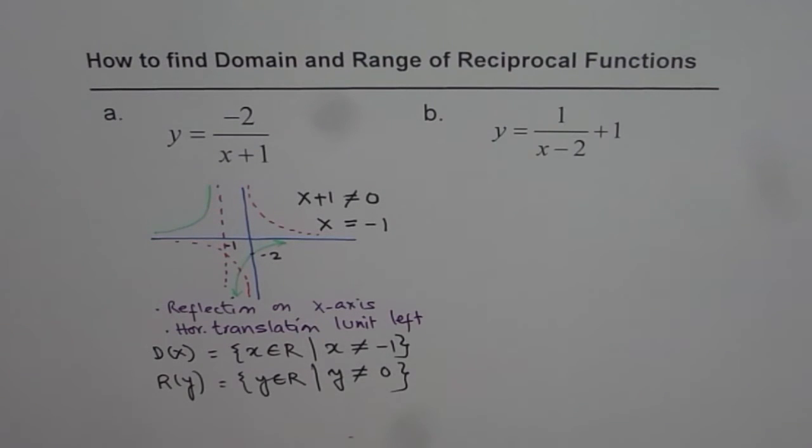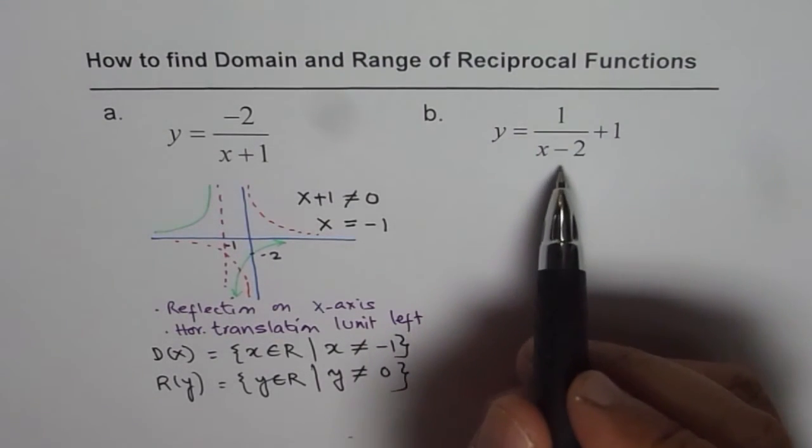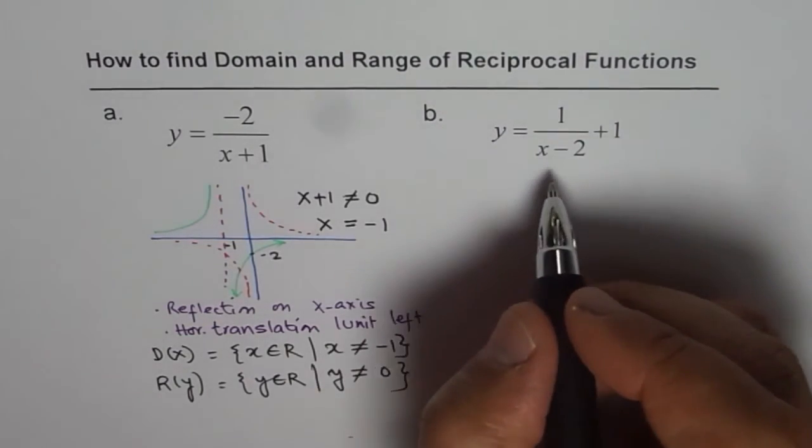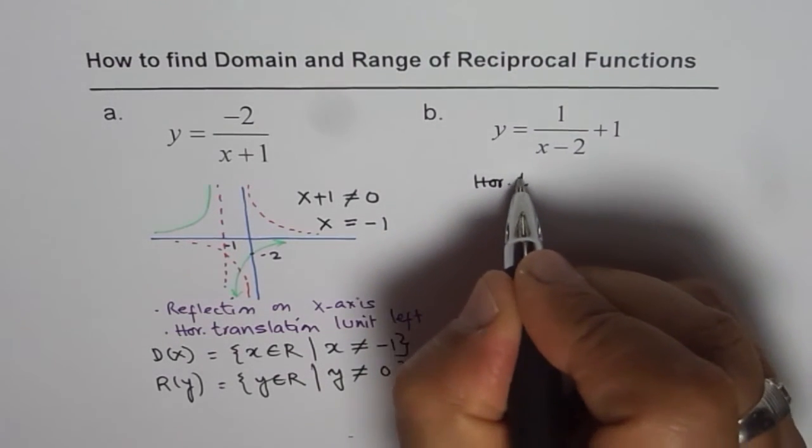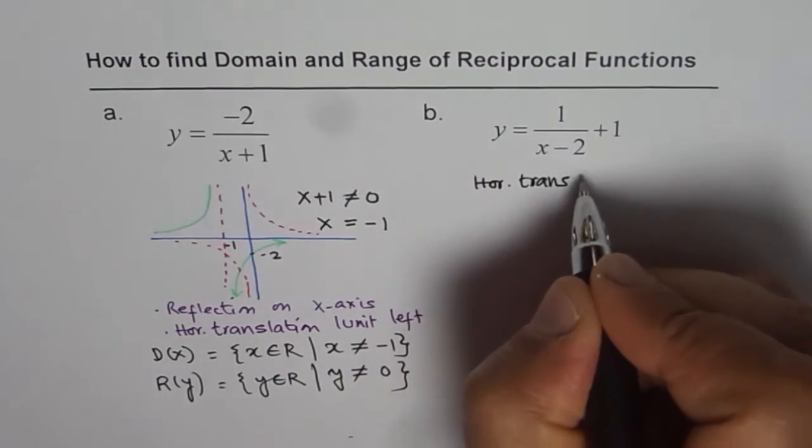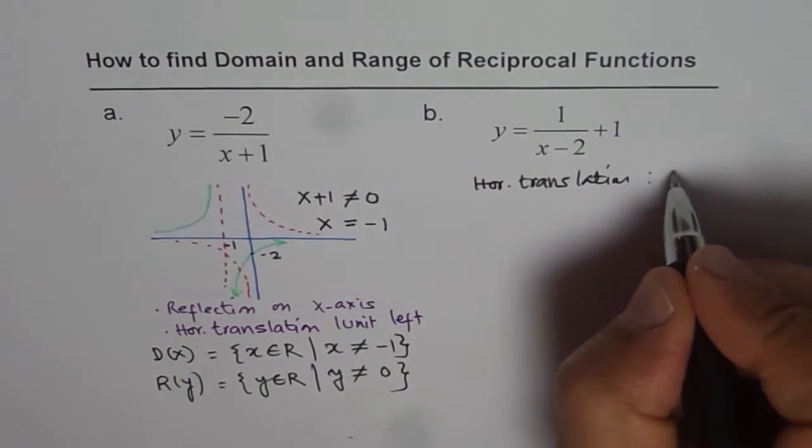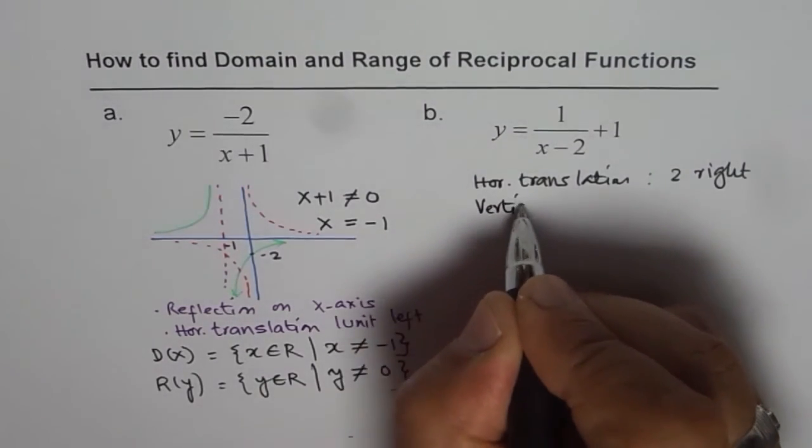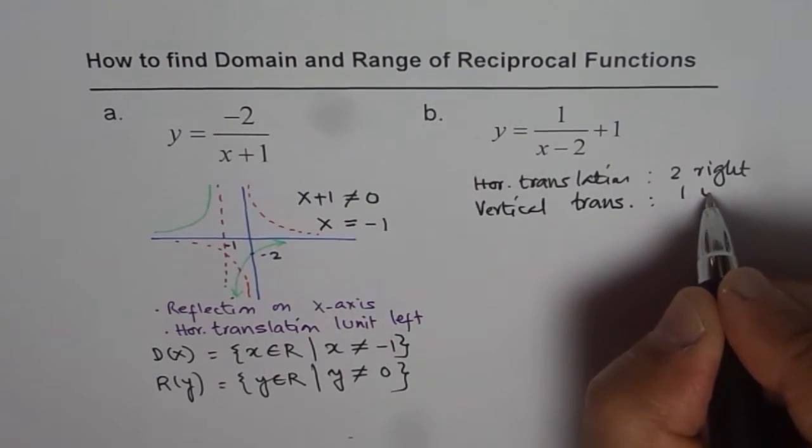So let us look into the second example. Let us say y equals 1 over x minus 2 plus 1. You can clearly see that we have horizontal translation, which is 2 units to the right, 2 units right, and vertical translation, which is 1 unit up.